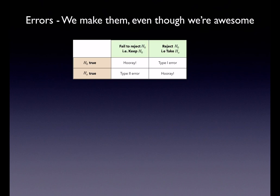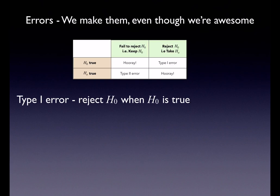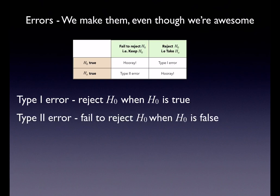A type one error — using the stats definition — is when we reject the null when the null is true. That's a problem: you're rejecting something that's true. A type two error is when you're failing to reject the null when it's false — so you're failing to reject something even though it's not true.